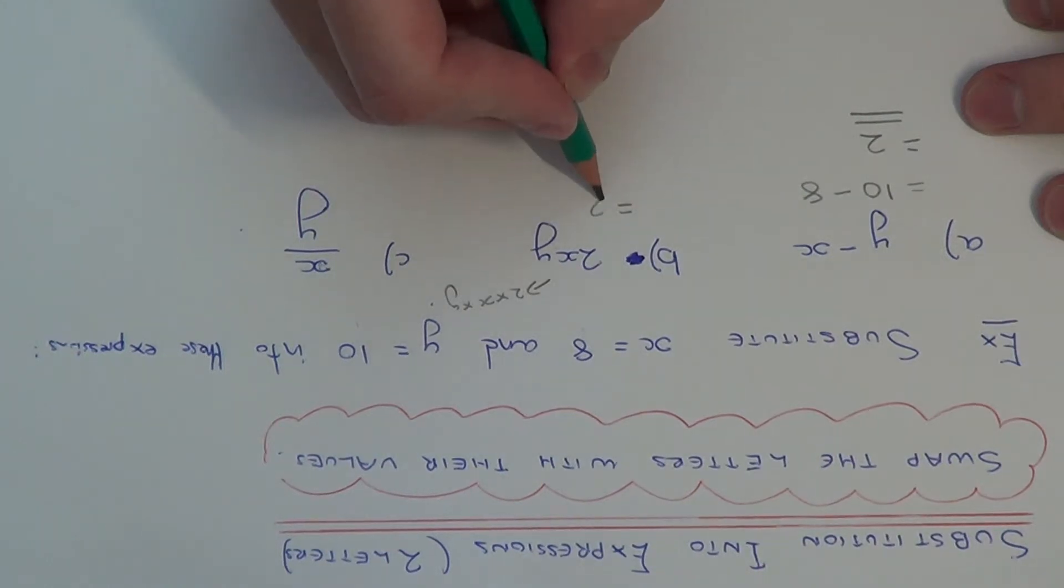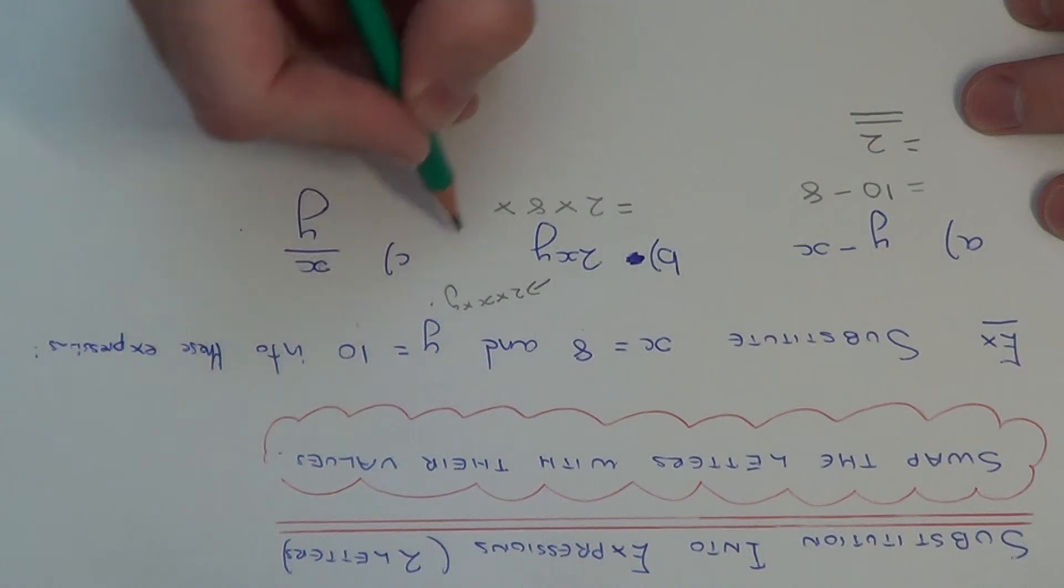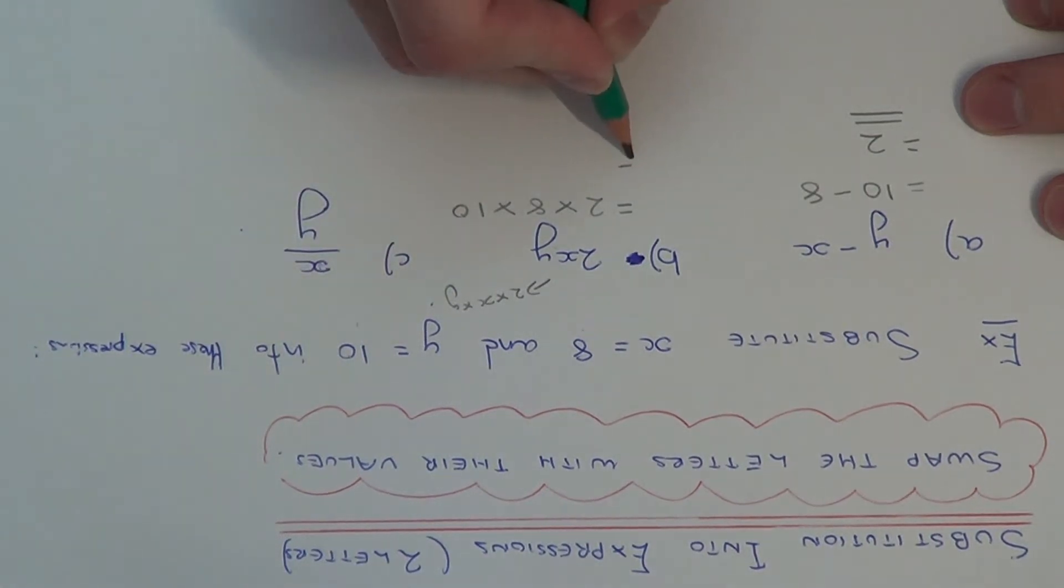If we do 2 times x which is 8 times y which is 10, we just need to work this out now. 2 times 8 is 16 times 10, and 16 times 10 is 160.